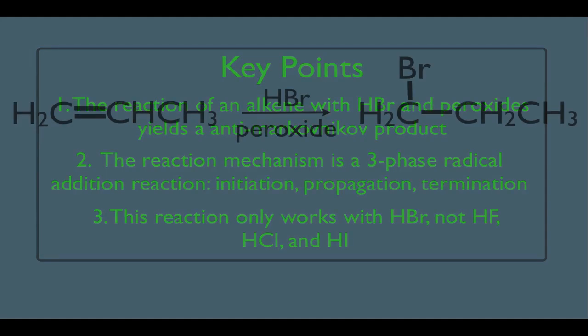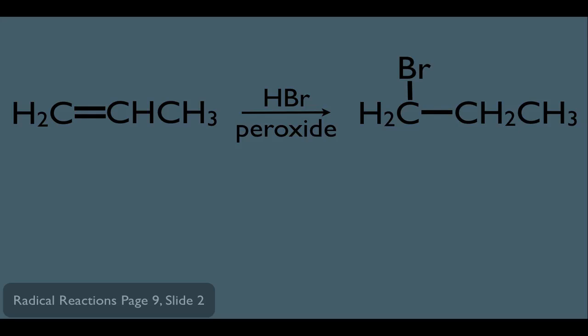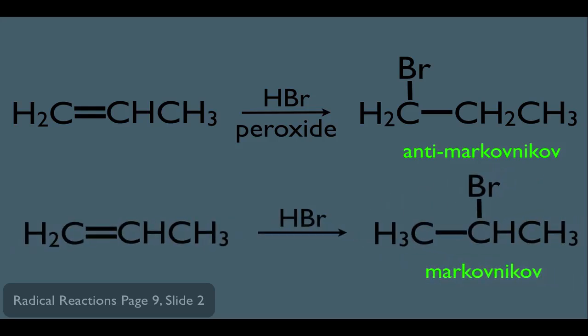Let's look at our overall reaction first. Here we have an alkene reacting with HBr, and notice this is the anti-Markovnikov product — the Br is adding to the carbon that has more hydrogens, or the carbon that is less substituted. Typically, the first orgo reaction you learn is HBr without peroxides to an alkene, which gives a Markovnikov product where Br adds to the carbon with fewer hydrogens, or the more substituted carbon. That mechanism proceeds through a carbocation intermediate, which is why we see the Markovnikov product.